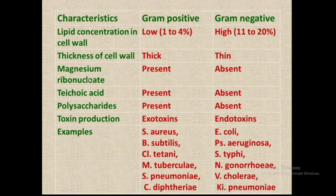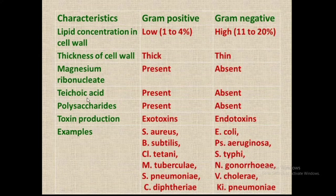The third important component is magnesium ribonucleate. This is present in gram positive bacteria but absent in gram negative. Such questions are asked — which is the specific component of gram positive bacteria? The answer is magnesium ribonucleate. Teichoic acid is also present in gram positive but absent in gram negative. Polysaccharides are also present in gram positive but absent in gram negative.